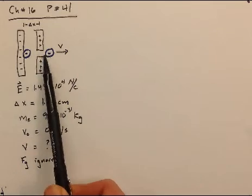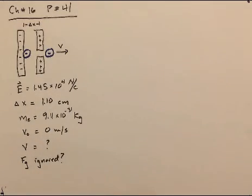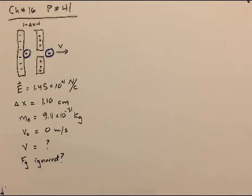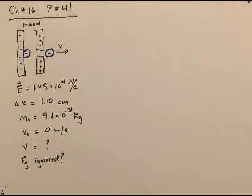And there's a hole in the positive plate so that when the electron leaves, it would leave at some speed v. And the problem is asking us, what is this speed? And can the force of gravity safely be ignored here? Is that an assumption that would be valid?